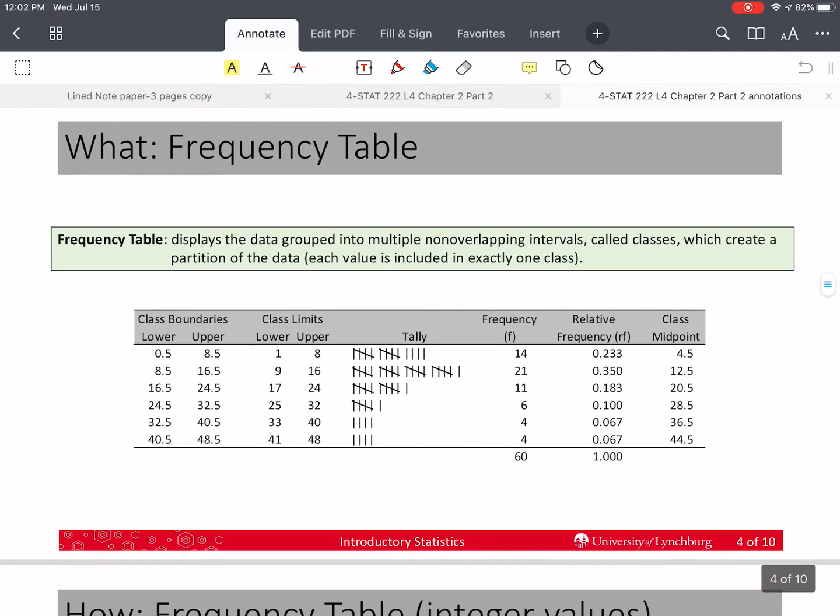So if you recall, a frequency table takes data that is quantitative and it groups it into these classes that are non-overlapping intervals. And non-overlapping intervals are called a partition when they break up the whole data set and you have each value in only one class so that when you add up the frequencies you get the total number of values in the data set.